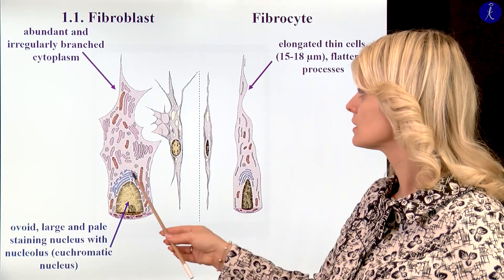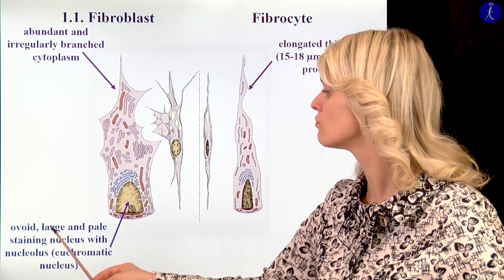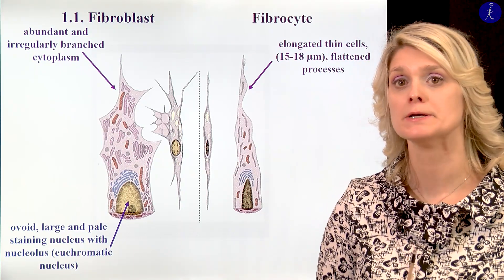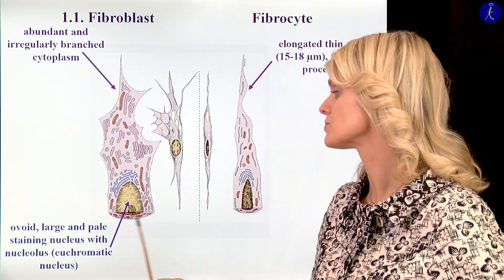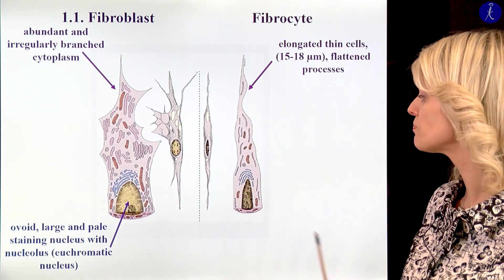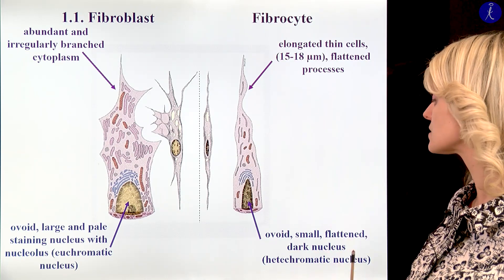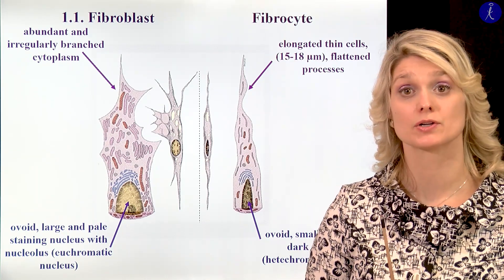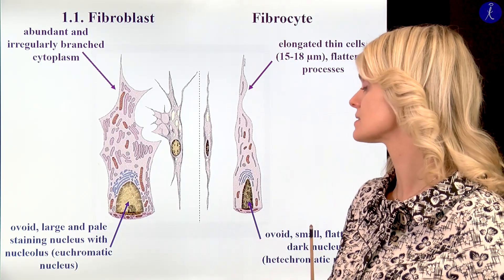If we see the nuclei of the fibroblasts, they have ovoid, large nuclei which are really pale because of the euchromatic nucleus. The fibrocytes, they have small, ovoid, darker nuclei compared to the fibroblast cell type.